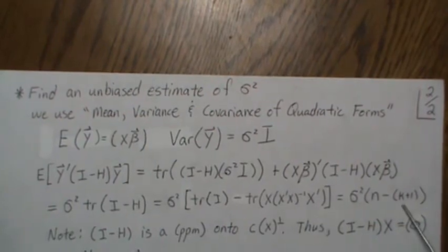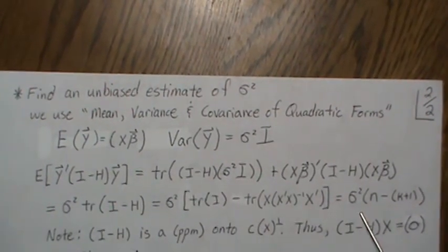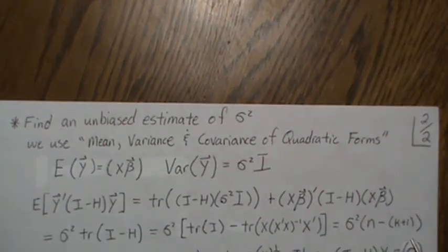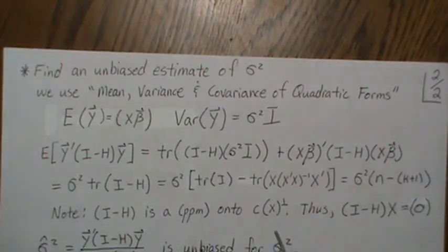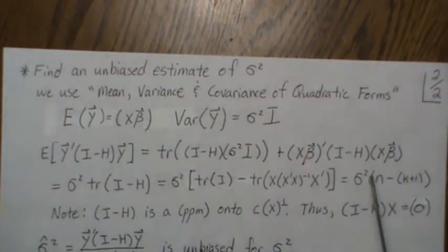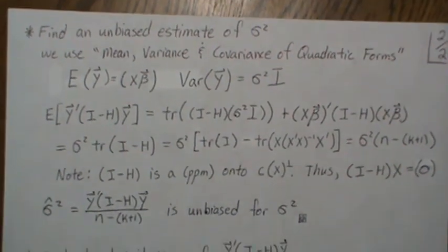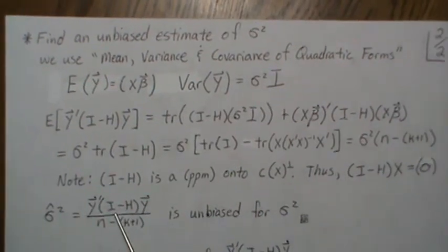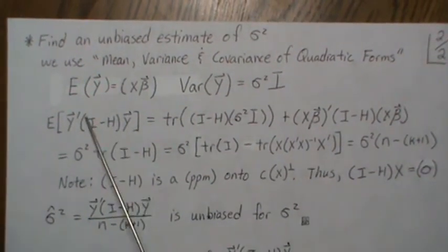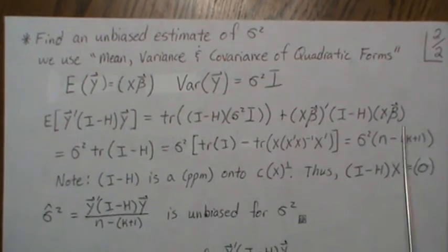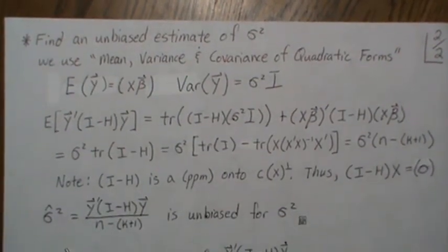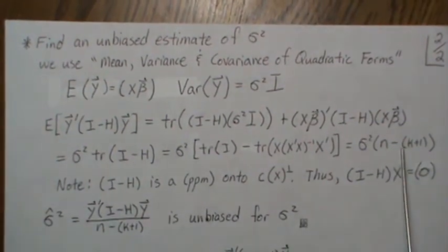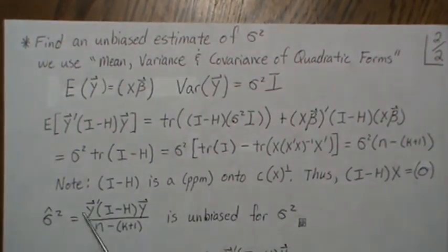So the expected value of the quadratic form is σ²(N − (K+1)) = σ²(N − K − 1). Note: (I − H)X = 0 because H is the projection onto the column space of X. Therefore, if we take the quadratic form and divide by (N − K − 1), we get an unbiased estimate for σ², since the constant cancels in the expected value.